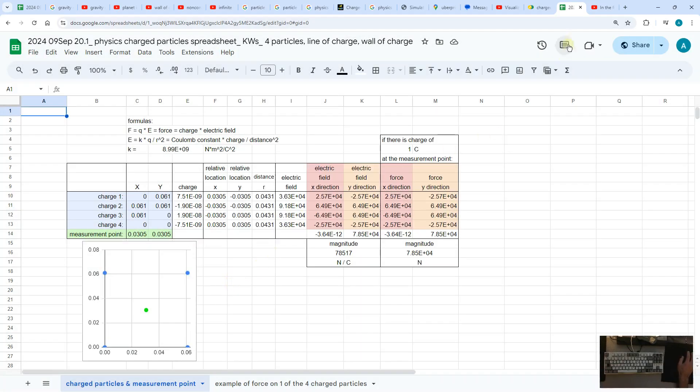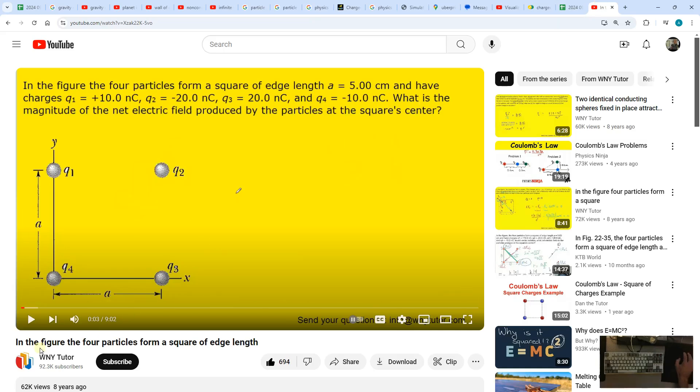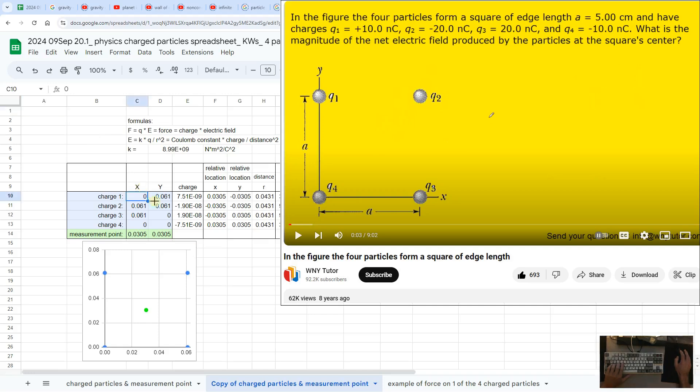The following shows how to put this problem from YouTube into the spreadsheet. Charge one is at x zero meters, y 0.05 meters. Charge two: 0.05, 0.05, 0.05. And the measurement point is at 0.05 divided by two for the x part, and y part is 0.05 divided by two.